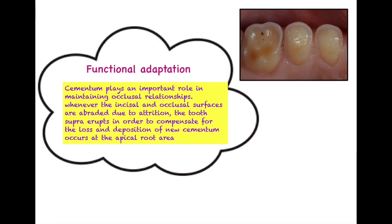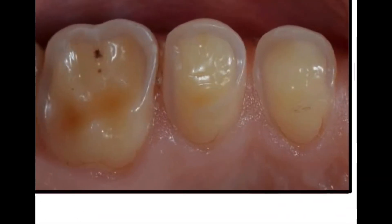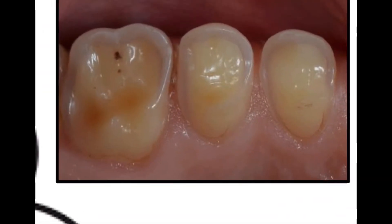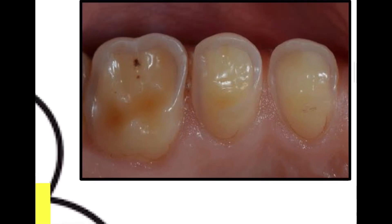The second function of cementum is functional adaptation. The word itself indicates it is doing something related to the function of the tooth, involved in some kind of adaptation. With increasing age, occlusal forces are continuously increasing as mastication is a lifelong process. There is natural wear of the occlusal as well as incisal surfaces of the tooth — this is known as attrition, the physiological wearing of the incisal edges and occlusal surfaces.